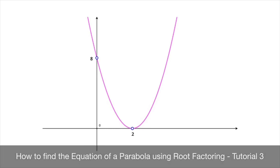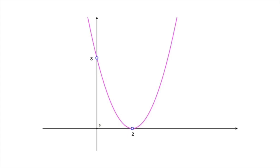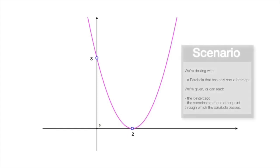We now learn how to use root factoring of quadratic functions to find the equation of a parabola, like the one we see here, when there's only one x-intercept — in other words, the curve only touches the x-axis in one point. We're going to do this with a couple of examples, and the first example is the one that we see here.